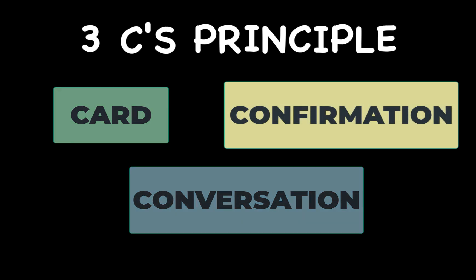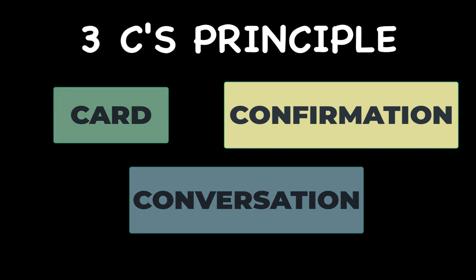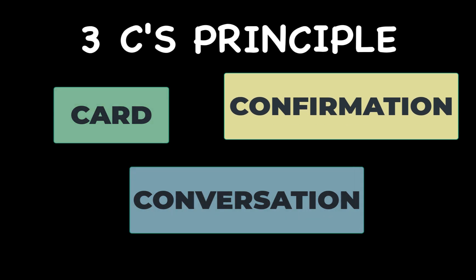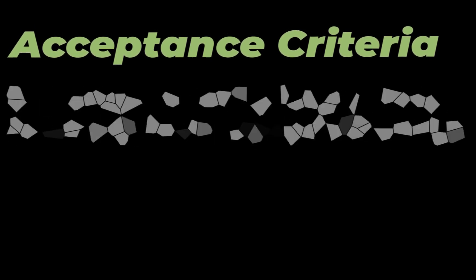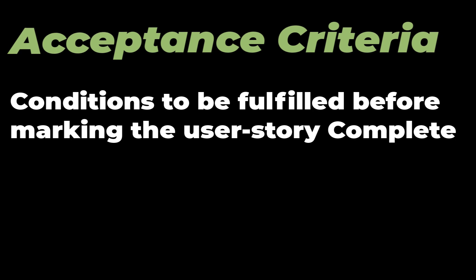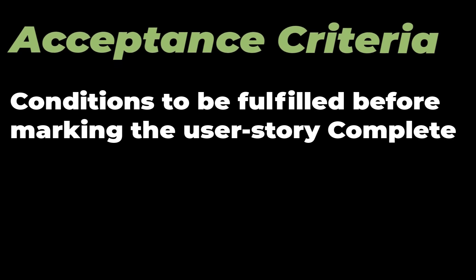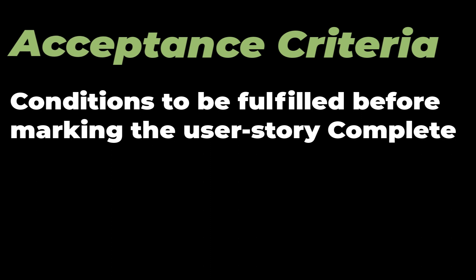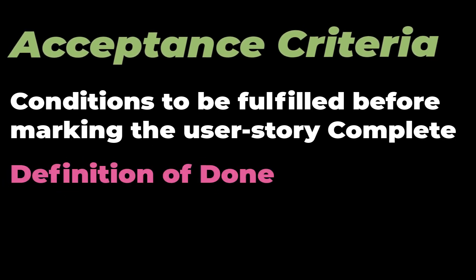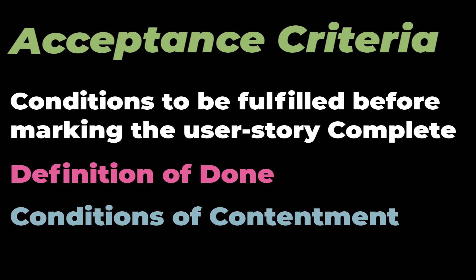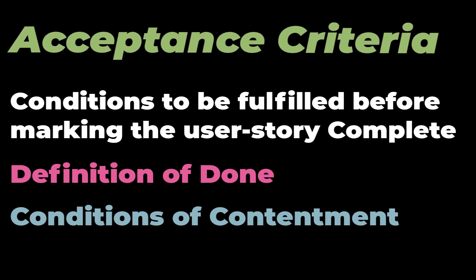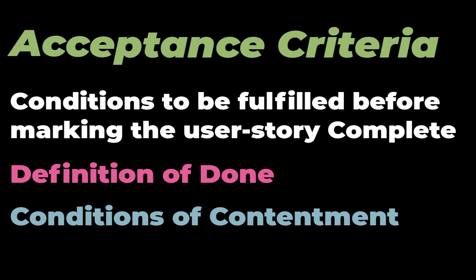Let's talk about the third C, that is confirmation. This C is to build user story acceptance criteria. Acceptance criteria of any user story are the conditions that should be fulfilled to satisfy the user or product owner that this story is completed. The teams have the acceptance criteria to be fulfilled as their definition of done. We can also say that these are the conditions of contentment on the user story card, and these conditions can be written on the back side of the card.